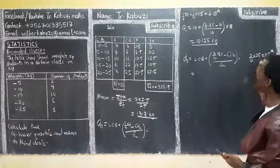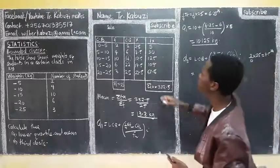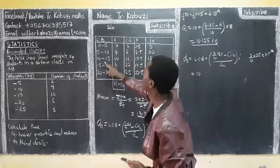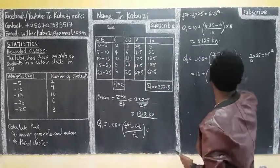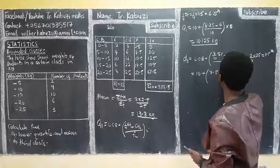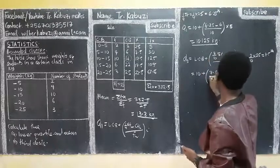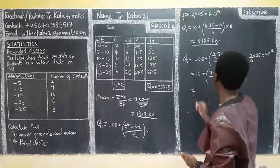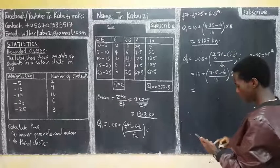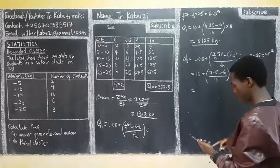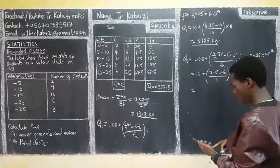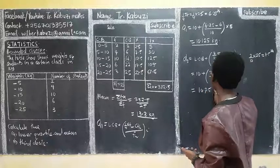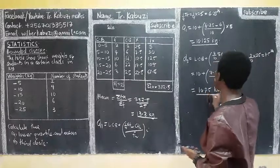So you have now the lower class boundary here is still 10. Plus, this one is 7.5 minus frequency before, it is 6, over frequency within, it is 10, times 5. And the answer we have there is 10.75. And put there kilograms.